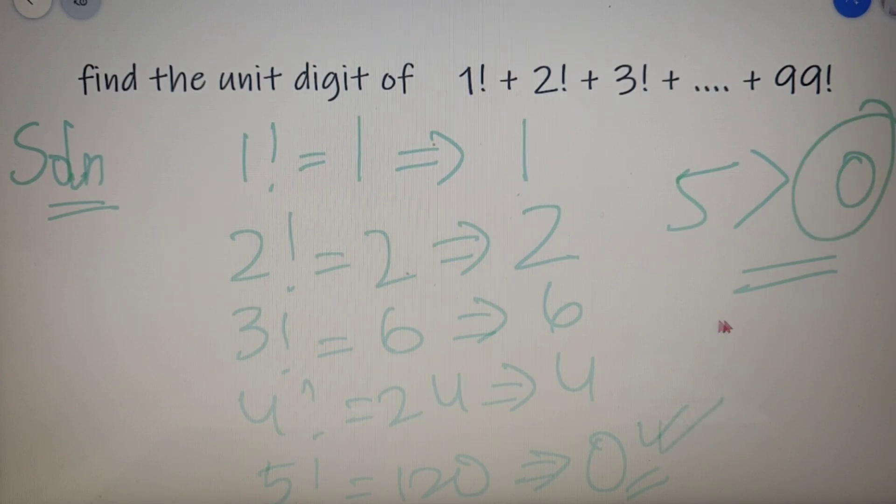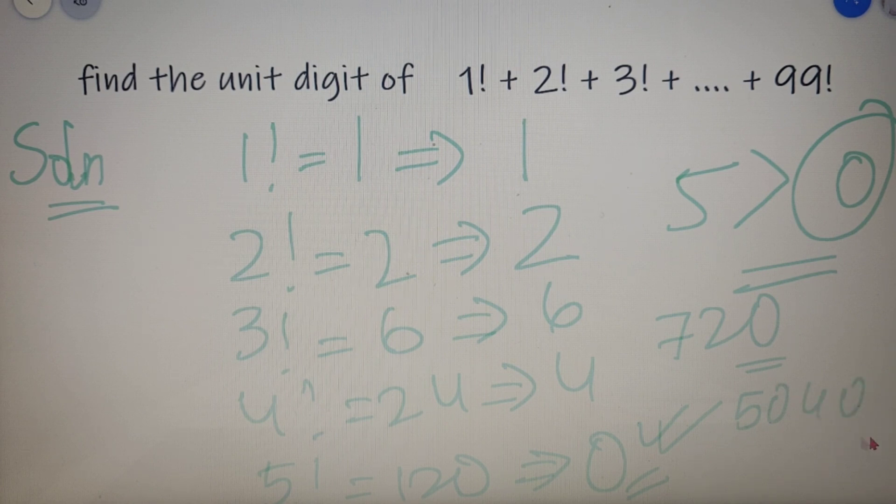So you can counter check this fact: 6 factorial is equal to 720 and it ends with 0. 7 factorial is equal to 5040 and it ends with a 0. And same is the case for all the numbers.